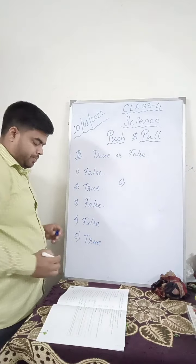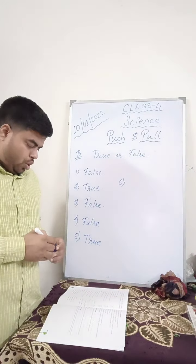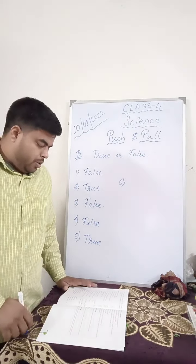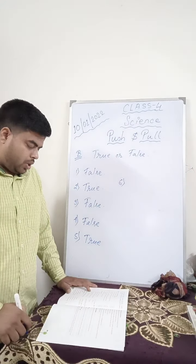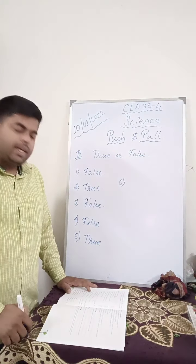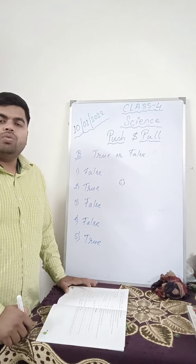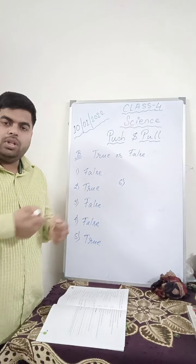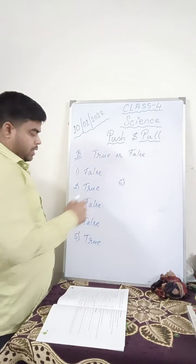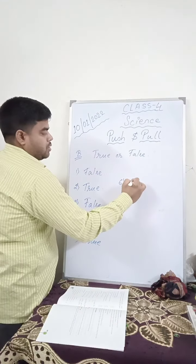Number 6. We push the rope in the game of tug of war. No — we actually pull the rope. So the answer is false.